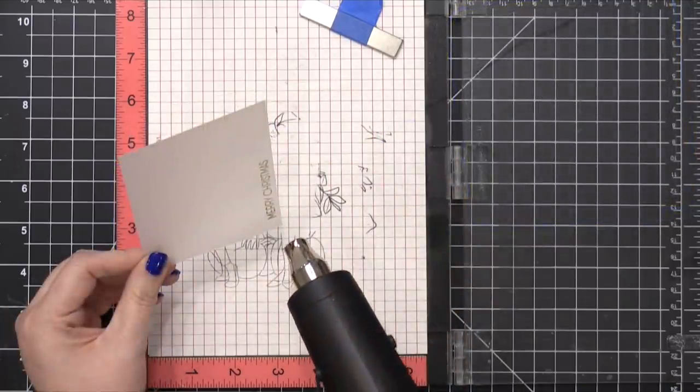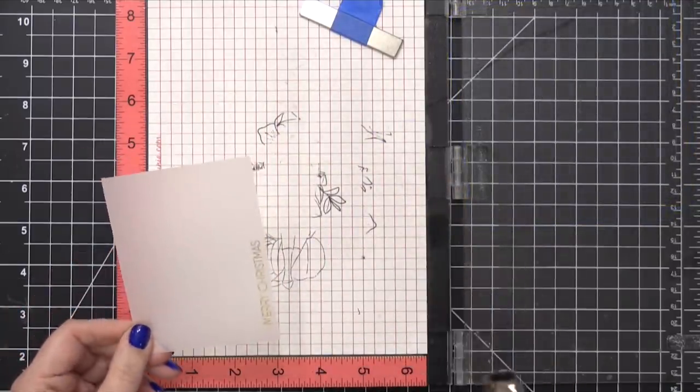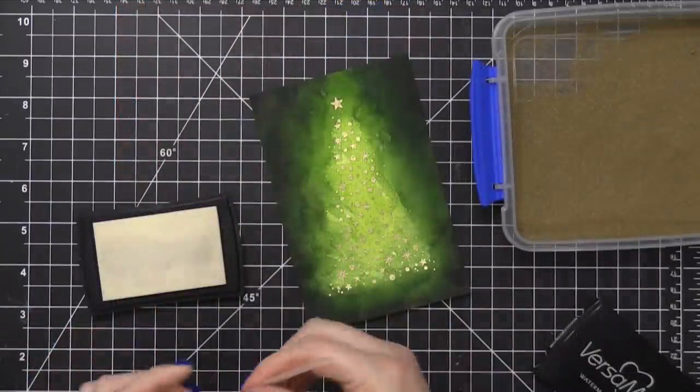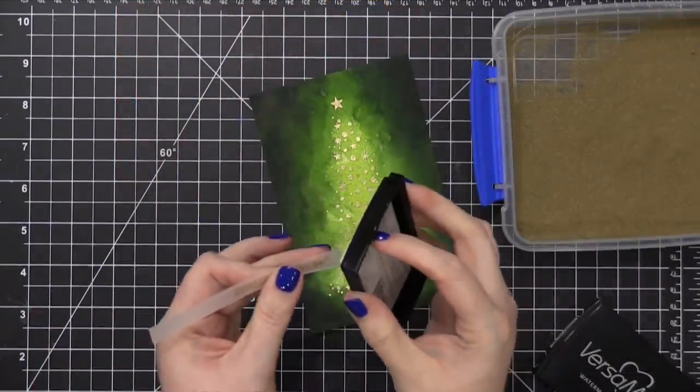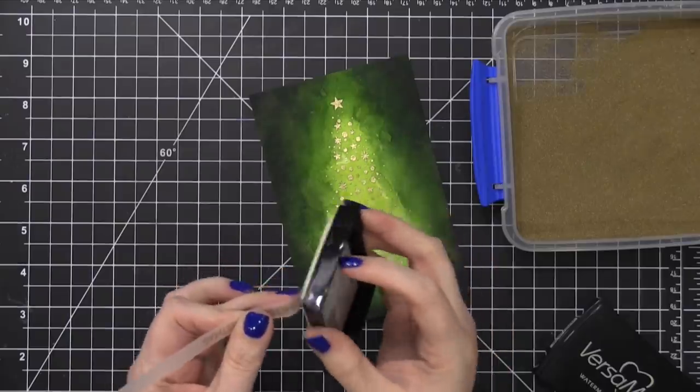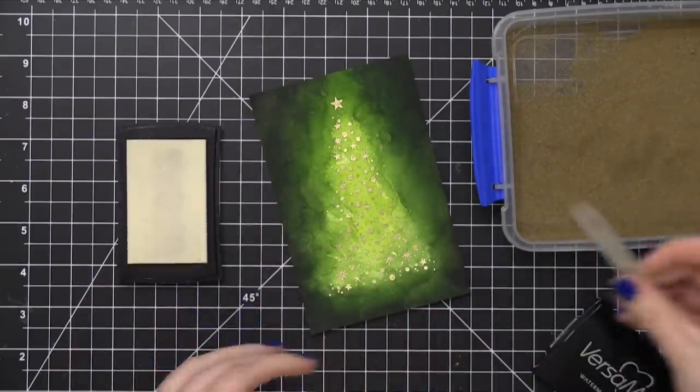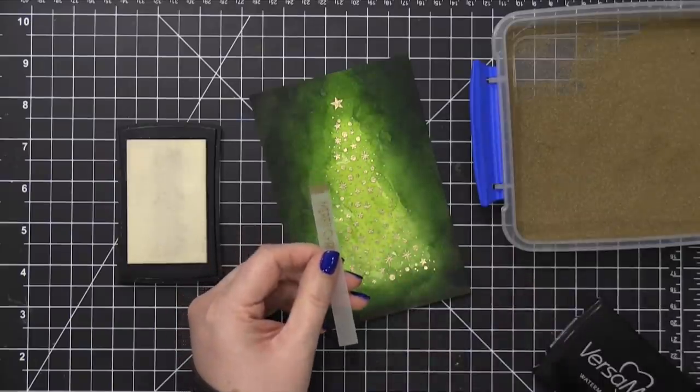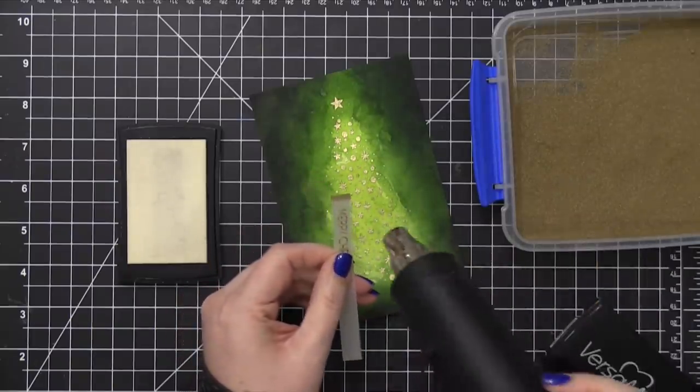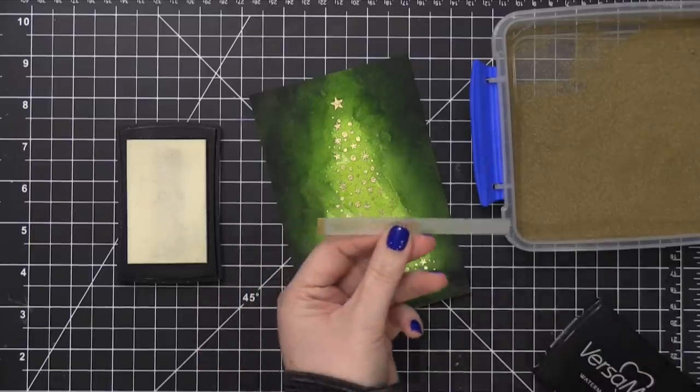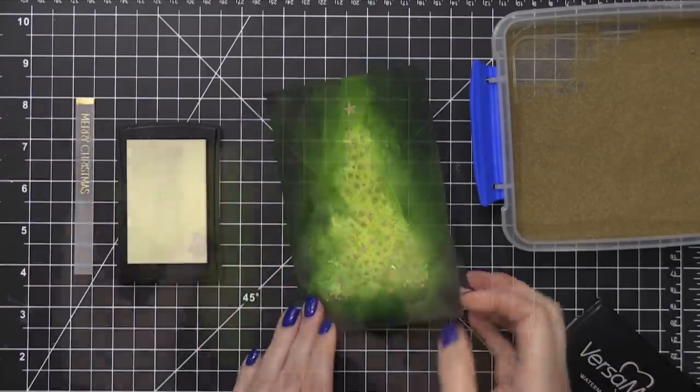I trimmed this piece down so that it was like a little narrow flag. Then I took my Versamark ink pad and I added it just to the left edge of that strip, dipped it in the embossing powder, and then hit that with my heat tool. This is going to give that one edge just a gold shade and that's going to give me an opportunity to put adhesive behind that area.